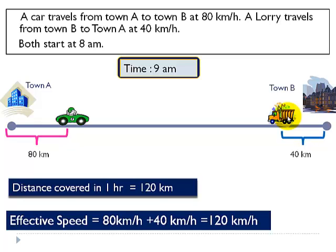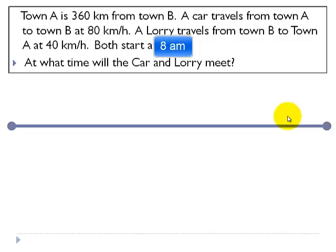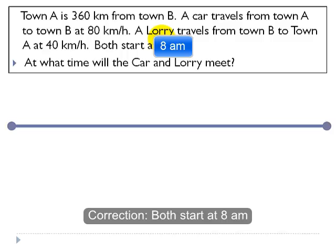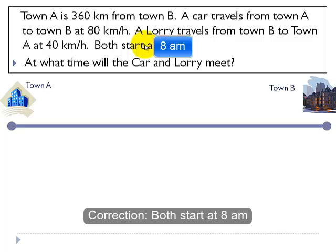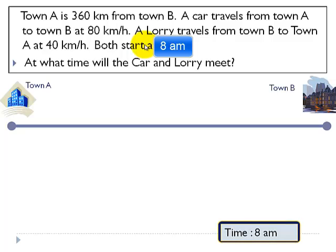Now let's take another similar question. Town A is 360 kilometers from town B. A car travels from town A to town B at 80 kilometers per hour, and a lorry travels from town B to town A at 40 kilometers per hour. Both of them start at 9 a.m. So we have town A and town B separated by 360 kilometers, with a car traveling at 80 kilometers per hour and the lorry at 40 kilometers per hour.